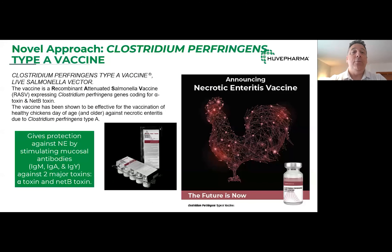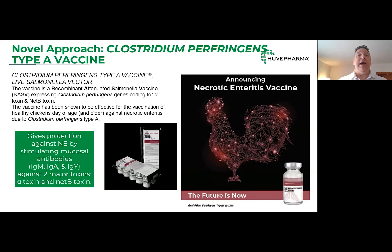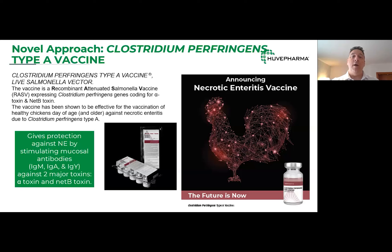The vaccine itself is a recombinant attenuated Salmonella vector vaccine — RASV technology. It has genes encoding fragments of both the alpha and NetB toxins. When administered to chicks at day of hatch through the hatchery, it can induce an immune response through mucosal antibodies right at the gut level — the site where the disease has the biggest impact. It does that by stimulating IgM, IgA, and IgY immunoglobulins against those two major toxins, preventing the development of lesions that lead to necrotic enteritis.